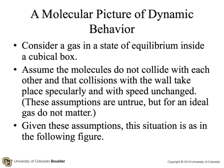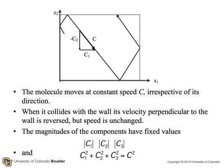Given these assumptions, the situation is as in this figure. So we're just following a molecule that has a speed C regardless of its direction, and it zooms across the box, bounces into the wall, reflects off at an equal but opposite angle, and so on. When it collides with the wall, its velocity perpendicular to the wall is reversed, but its speed is unchanged.